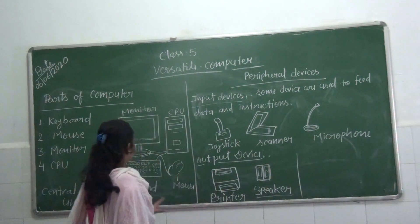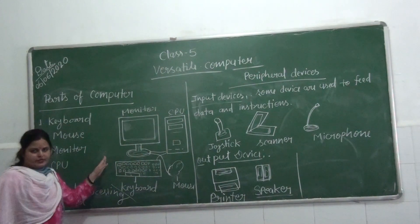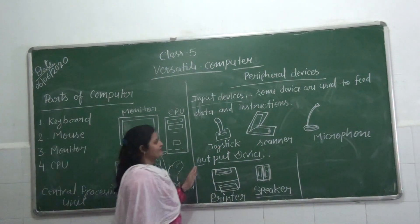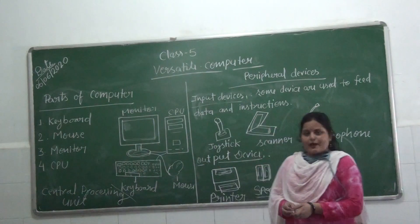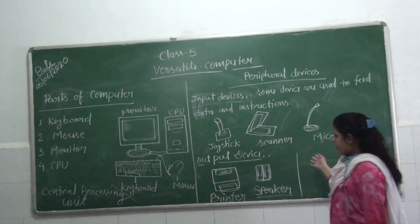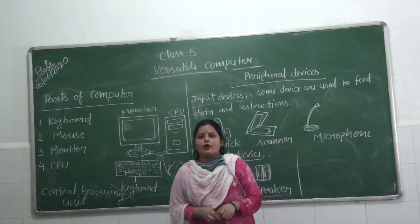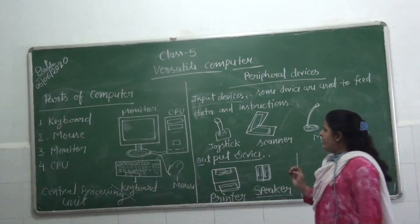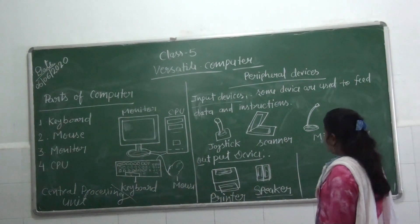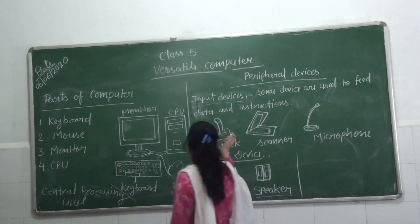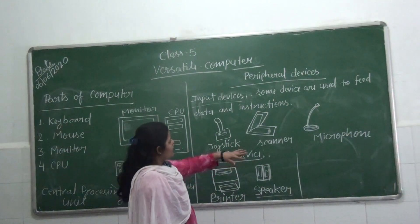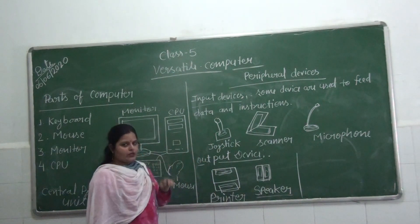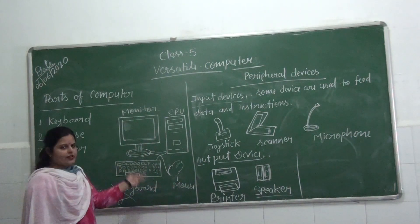Students, these are the main devices attached to the computer. Now let's talk about peripheral devices. What is a peripheral device? A peripheral device is not necessarily required to attach to the computer, but its work is different. The first category is input devices — devices used to feed data and instructions into the computer. Keyboard and mouse are the main input devices.